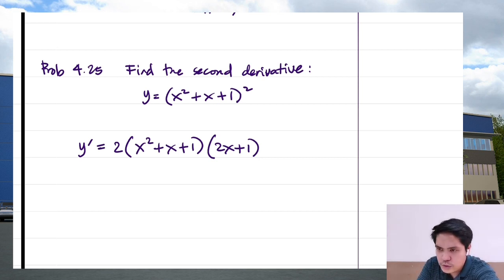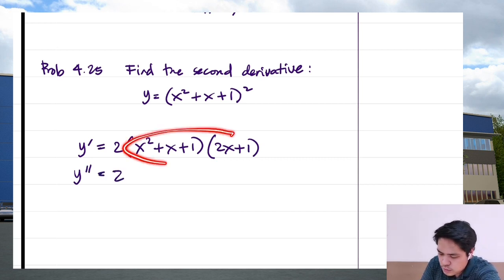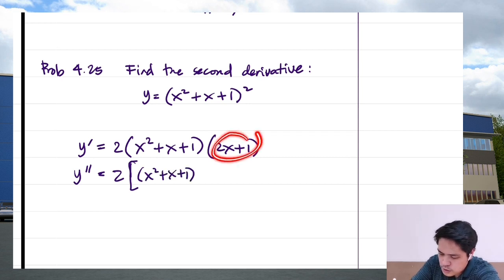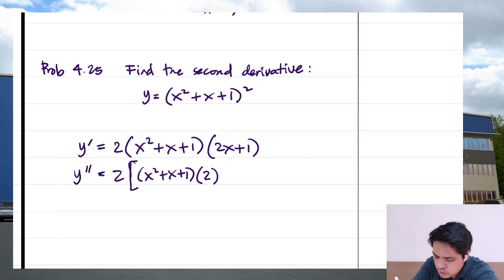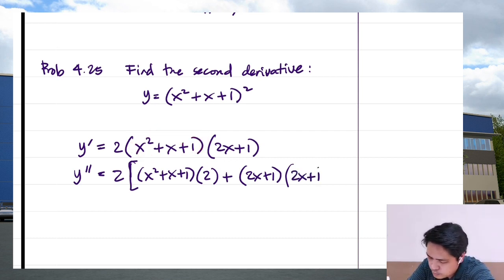Now let's solve for the second derivative, y double prime. That would be 2 times the derivative of the product of two functions. Using the product rule: copy the first function (x² + x + 1) times the derivative of the second function (2x + 1), which is just 2. Plus copy the second function (2x + 1) times the derivative of the first function, which is also (2x + 1).